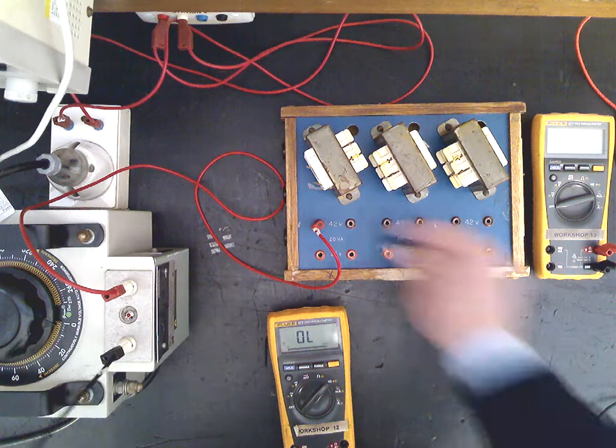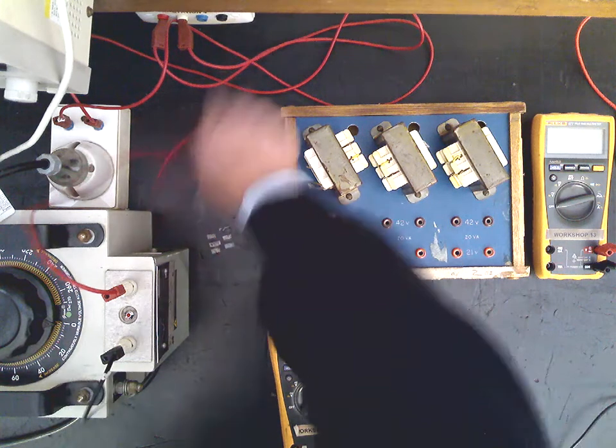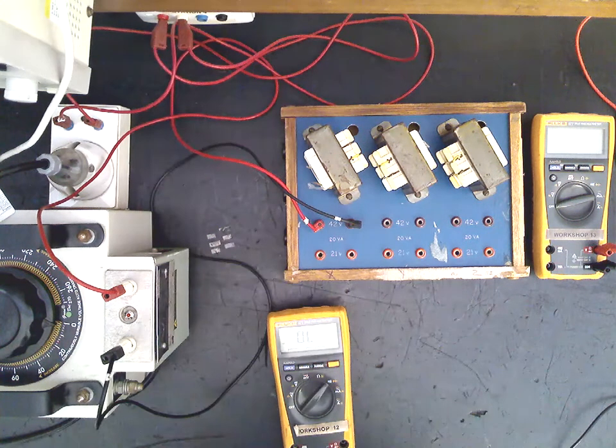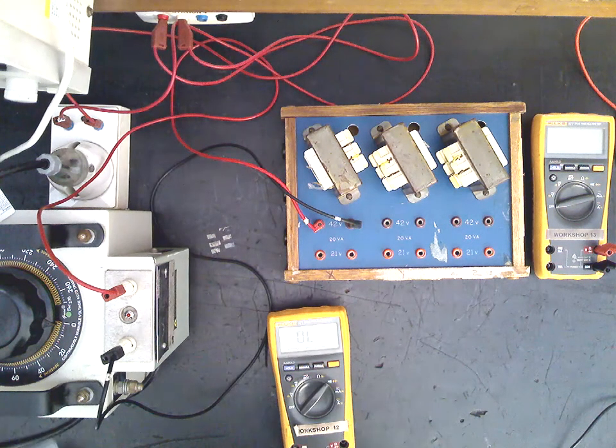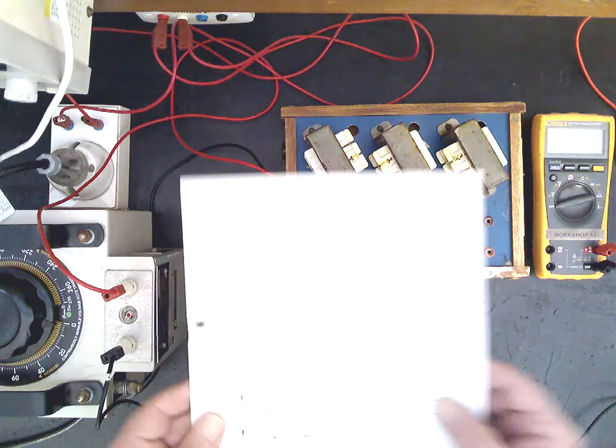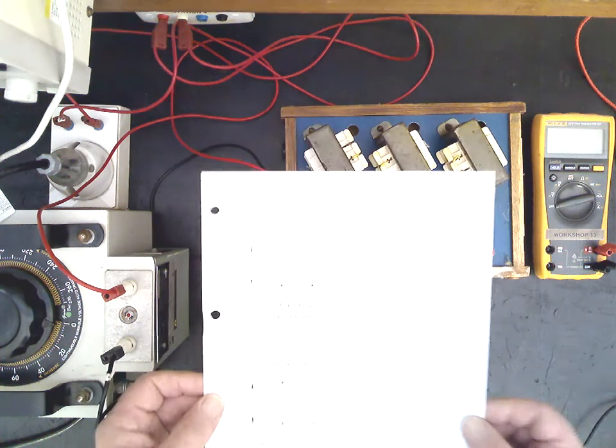So there's our active and neutral supply going into the primary of the transformer. Now the circuit that we're going to look at actually, where am I? Just can't quite get that image on there at the moment. There it is coming through.